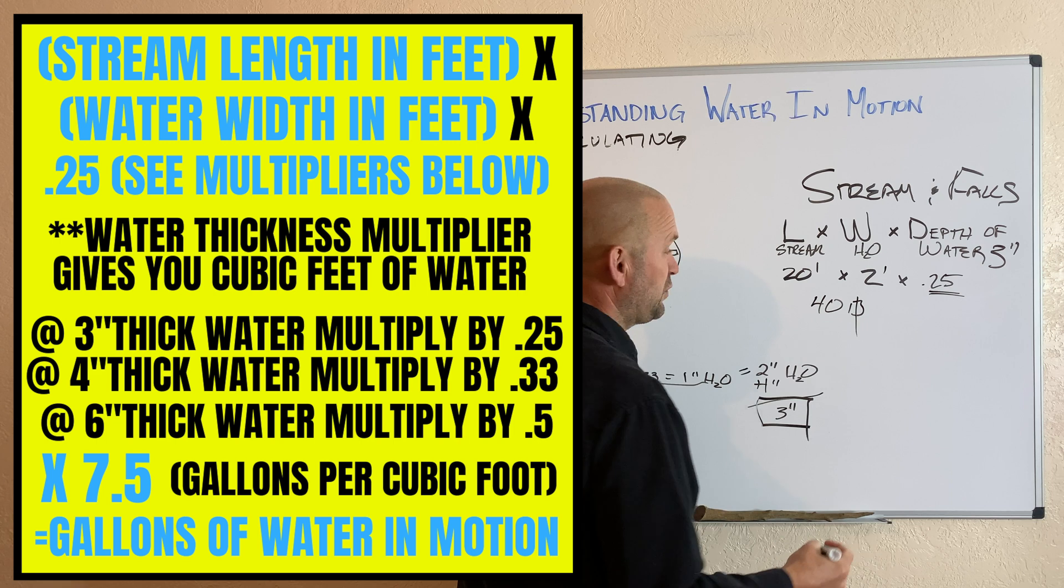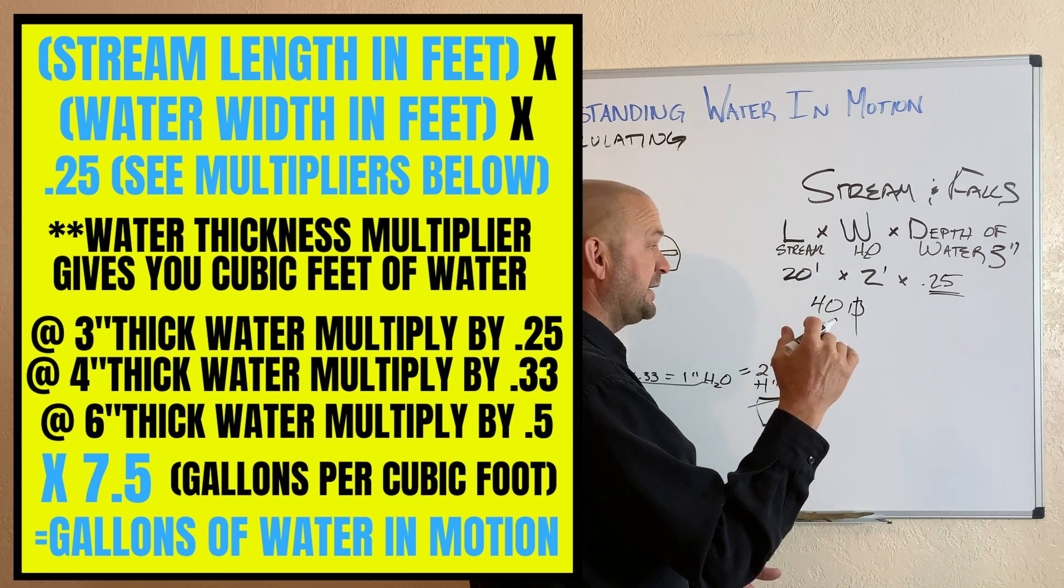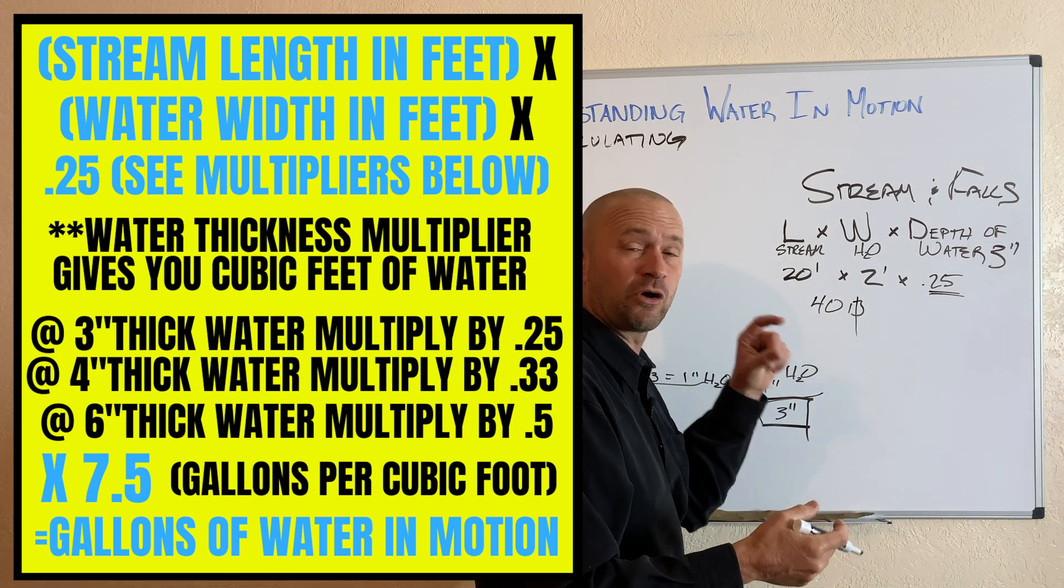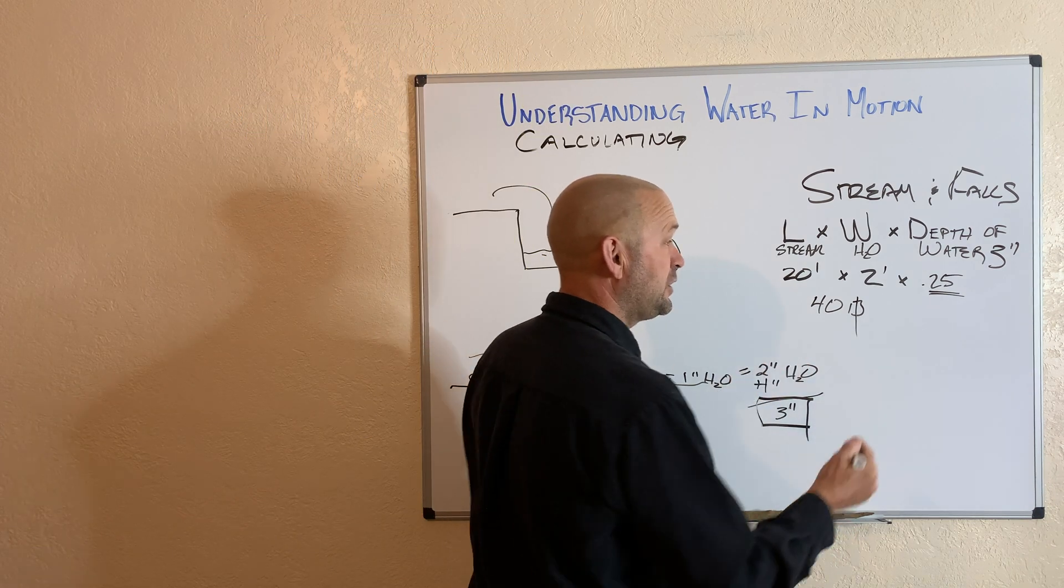So 20 feet times two feet wide gives me 40 square feet. Now if that was a foot thick, it'd be 40 cubic feet, but it's only a quarter of a foot thick.